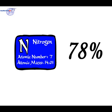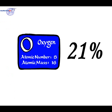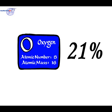Nitrogen is the most prolific of these, making up 78% of the total volume of gas in the atmosphere. Next is oxygen, which accounts for 21% of the total volume of gas in the atmosphere.